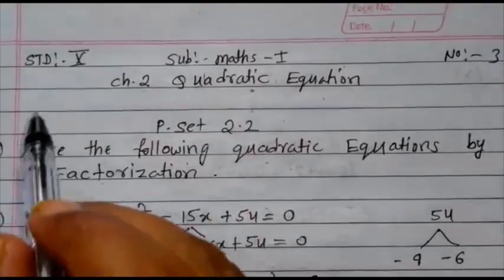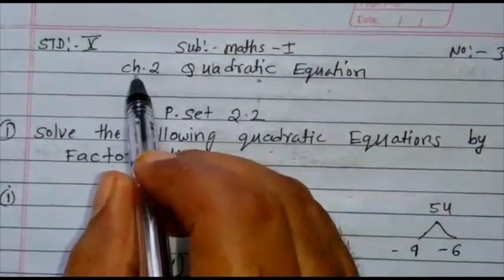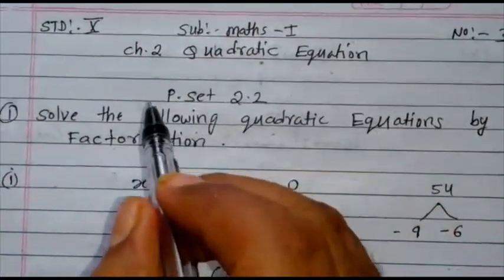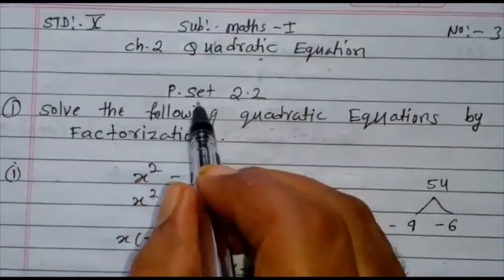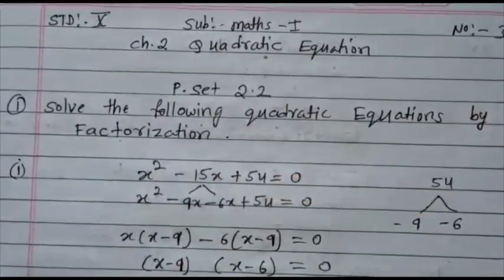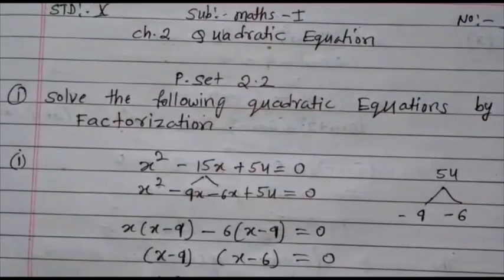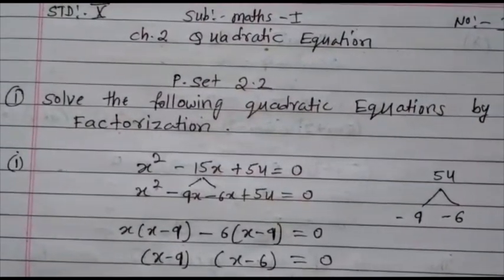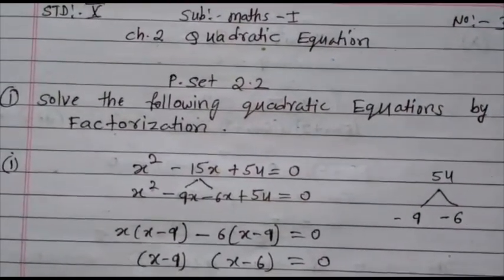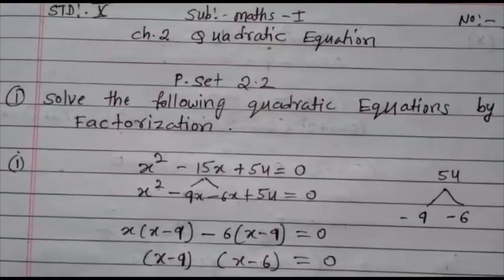Today we are going to learn Standard 10, Subject Maths 1, Chapter No. 2, Quadratic Equation. We are going to solve Practice Set 2.2. Quadratic equations are solved by three methods: one is known as the factorization method, the second is known as the completing square method, and the third is known as the formula method.